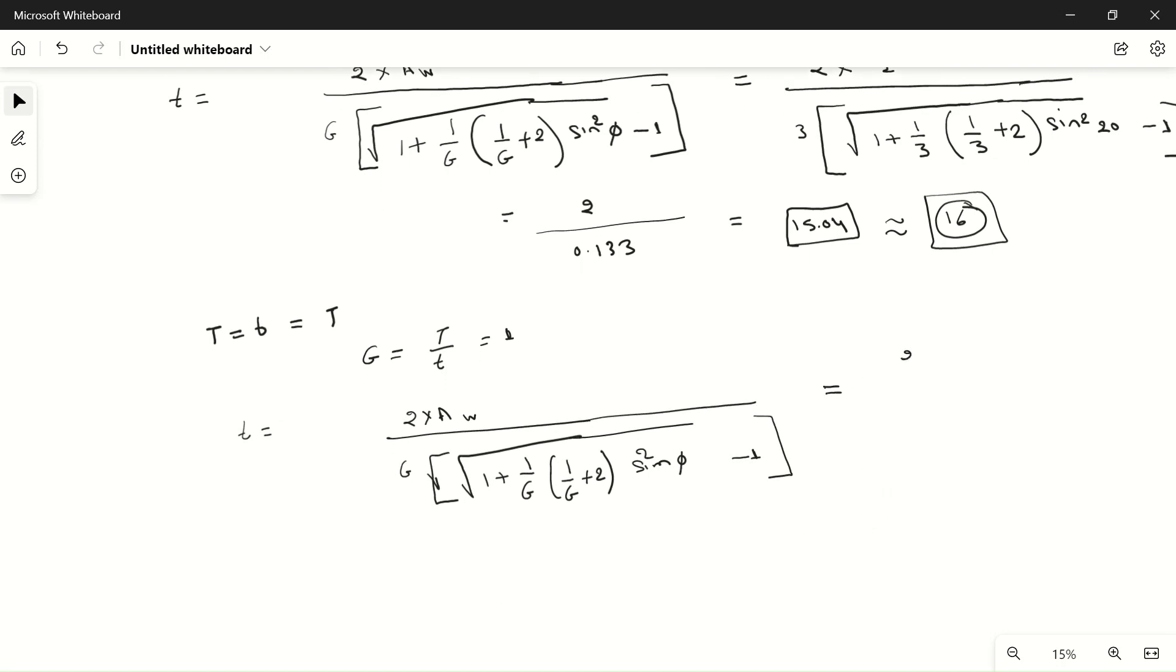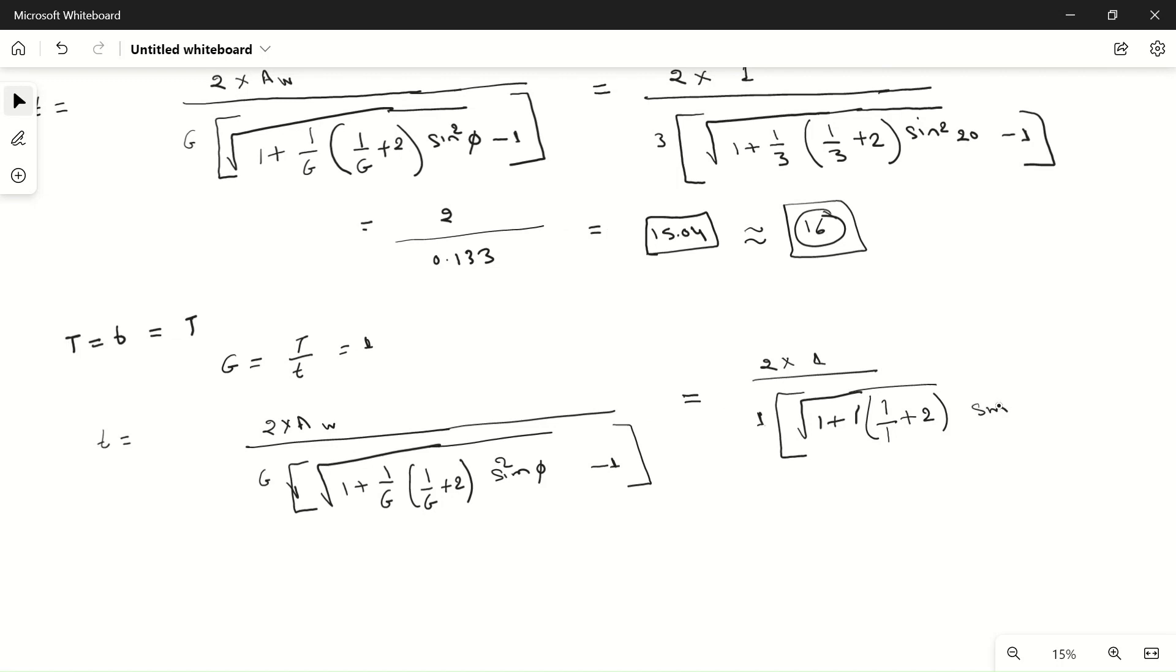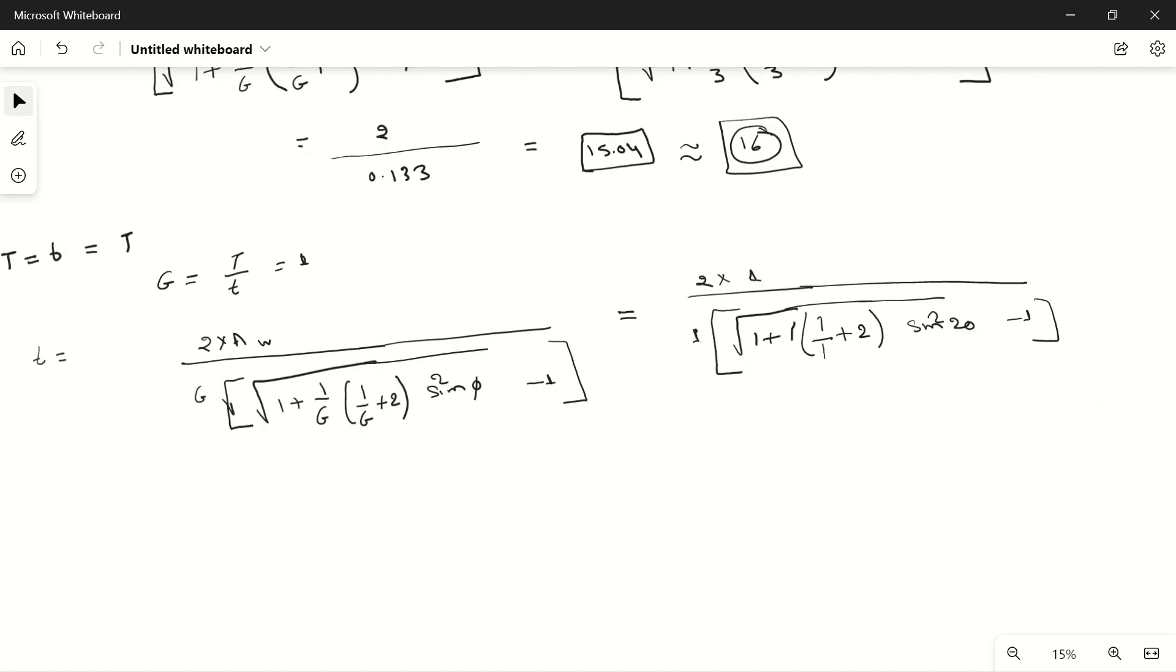This equals 2 times 1 divided by 1, times the square root of [1 plus 1 times (1 plus 2) times sine squared 20], minus one. So 1 plus 1 plus 2 is 3.